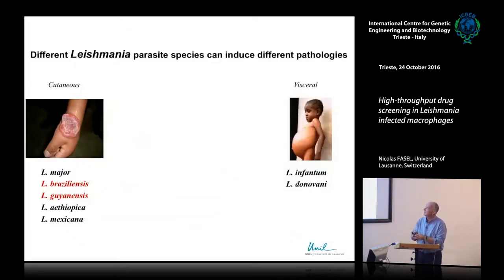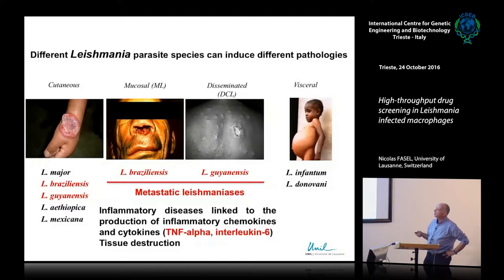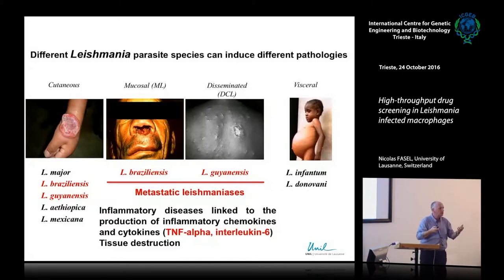If we take the different Leishmania species, you have different types of pathologies. You have cutaneous Leishmania species on one side of the spectrum and visceral Leishmania on the other — cutaneous induced by L. major, braziliensis, and guyanensis; visceral by infantum and donovani. In the middle you have what we call metastatic Leishmania species, because after a primary lesion you can end up with mucosal or disseminated lesions in the skin. What you observe in this kind of pathology is really the presence of inflammatory chemokines and cytokines.